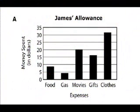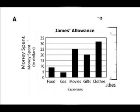Look at A. This is a bar graph. In the bar graph it shows we have $8 worth of food, $4 worth of gas, $20 worth of movies, $16 worth of gifts, and $32 worth of clothes. Now this is ranked, but let's see the others.